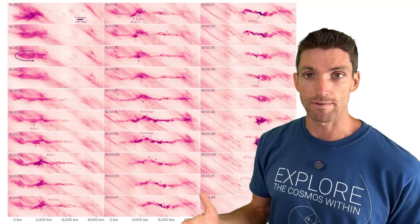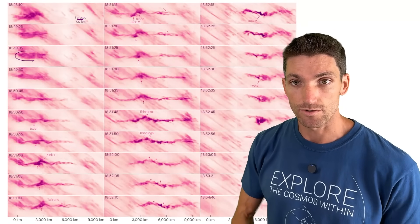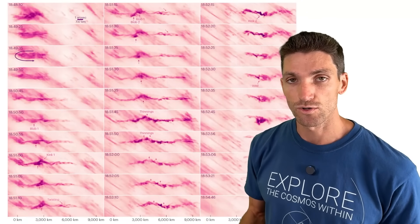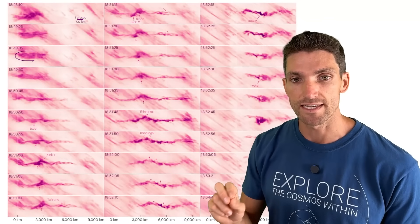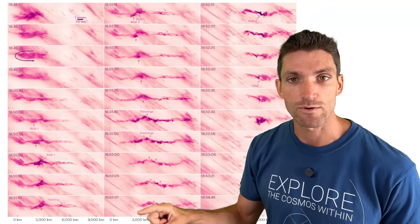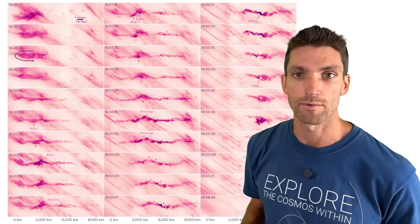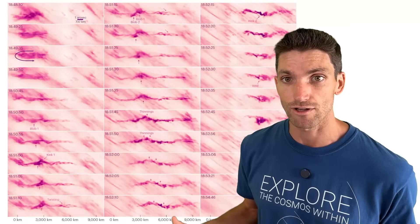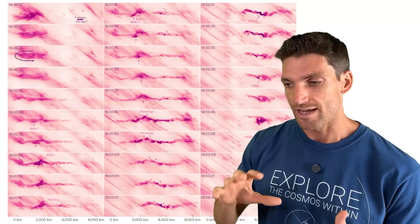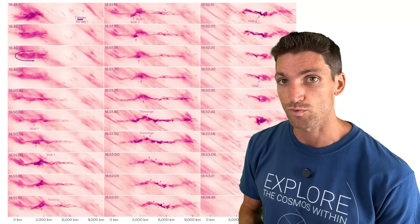But maybe in 20, 50 years, who knows how far down the line, our solar optics will be so much more advanced that we can resolve details within just 1,000 kilometers, maybe even 100 kilometers or 50 kilometers or 10 kilometers. Who knows what sort of interesting plasma structures we'll observe then.